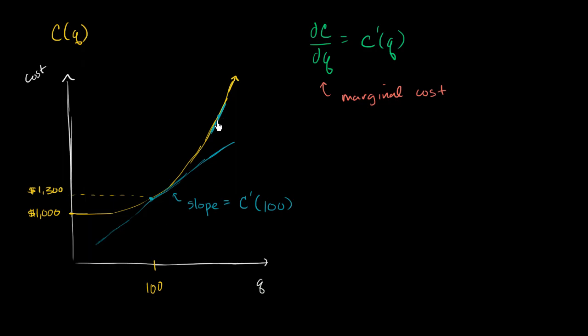But if that next gallon, if I'm up here, I've already produced a lot, and I'm taking all the oranges off the market, and now I have to transport oranges from the other side of the planet, or whatever it might be. And now that incremental gallon of orange juice cost me $10 to produce, and I'm not going to be able to sell it for more than $6, then it doesn't make sense for me to produce it anymore.